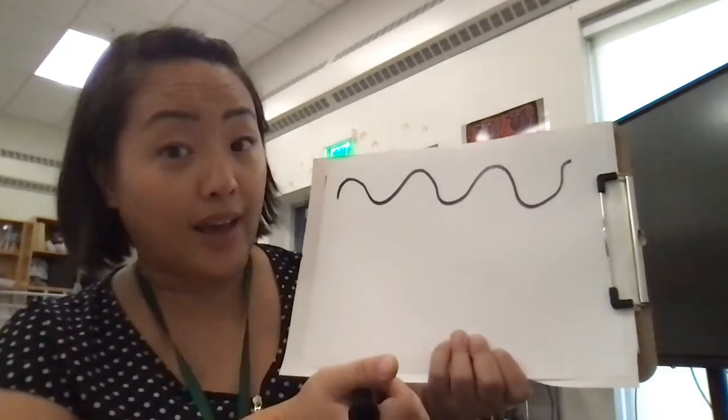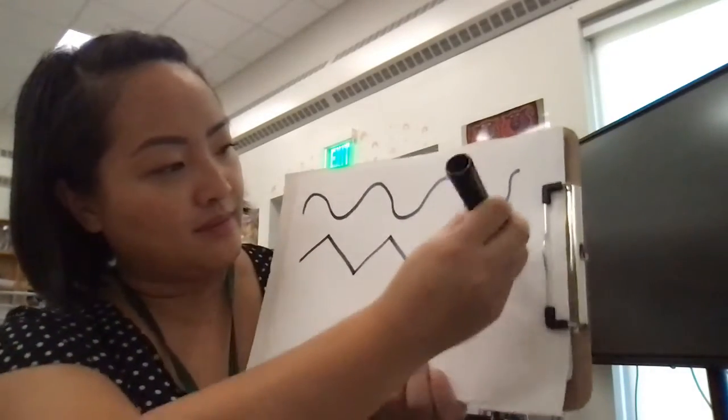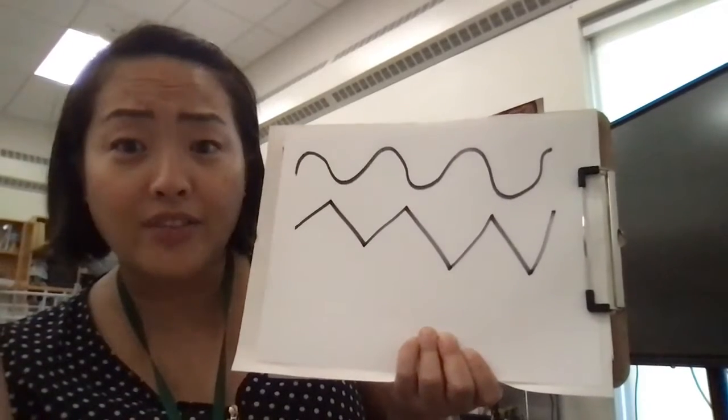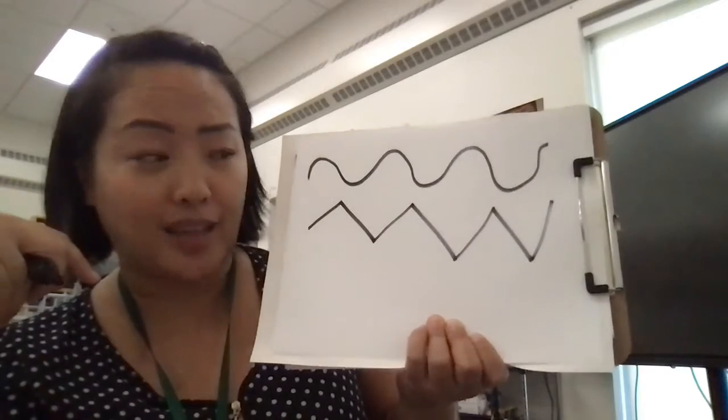What about a line that looks like this? Do you have a name for that line? I call that a zigzag line.